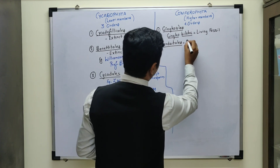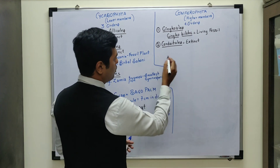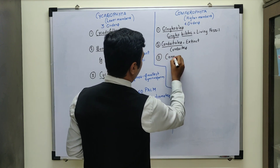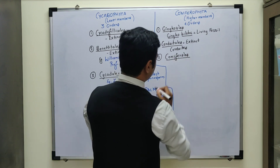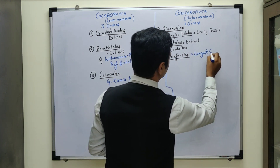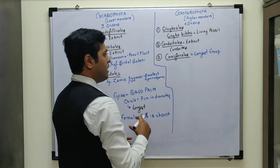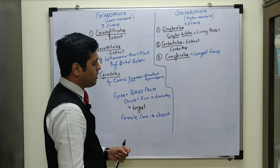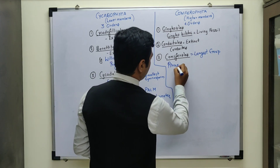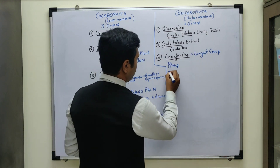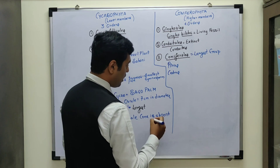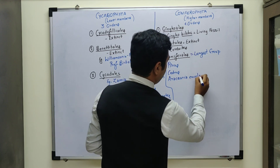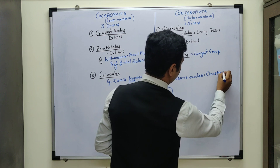The next order is known as Coniferales, and Coniferales is actually the largest group of Gymnospermae — just like Pteropsida was one of the largest groups in Pteridophytes, similarly in Gymnospermae, Coniferales is the largest group. Some important examples of Coniferales are the Pinus plant and the Cedrus plant, also known as Deodar.